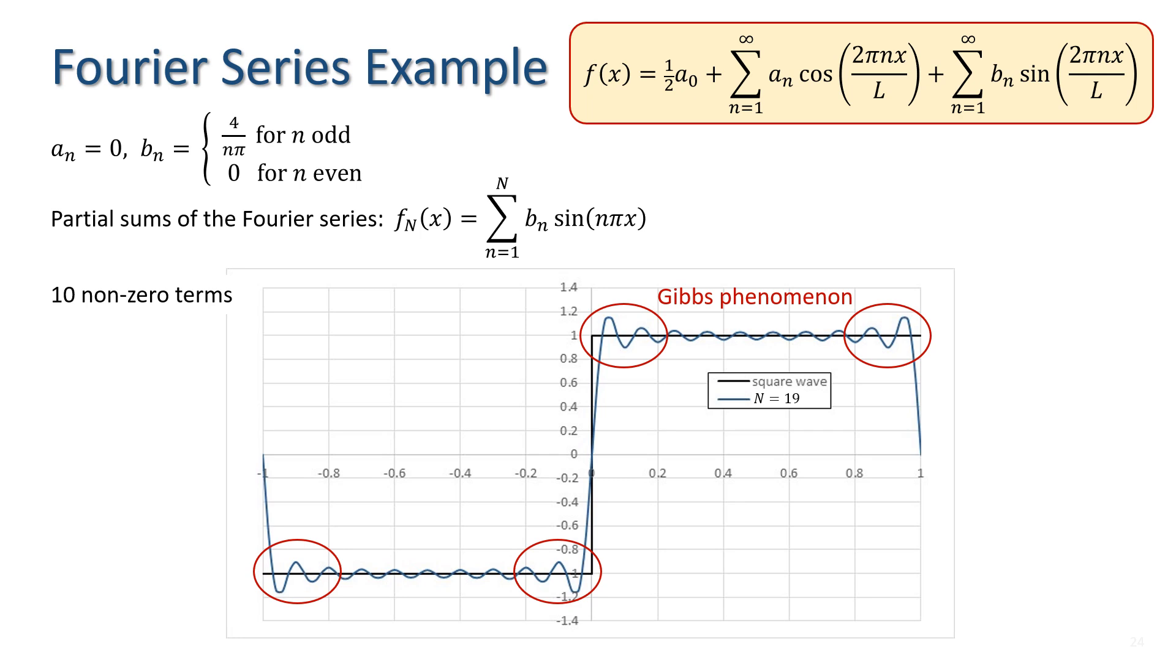It arises because we are attempting to model a discontinuous function with a series of continuous functions. The amplitude of the oscillations does decrease as the number of terms increases, but it never goes away.